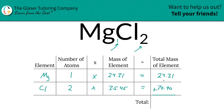And then, to find the total mass of the entire compound, simply add this column up, and it works out to be 95.21. The units here are going to be in terms of AMU — atomic mass unit — because we're solving for molecular mass.